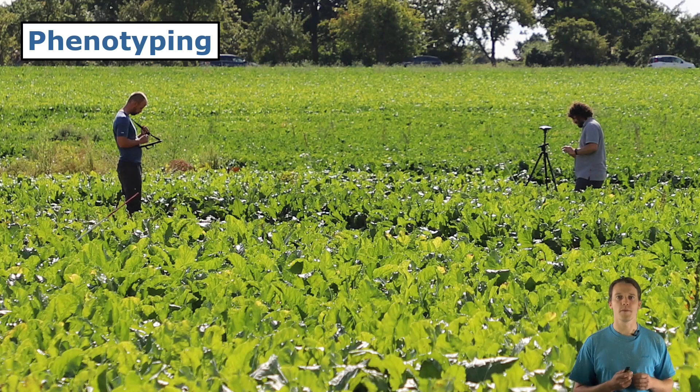One important step in the breeding process is the selection of the mother plants for the next breeding generation by evaluating specific traits, for example the leaf area. This process is called phenotyping. Today phenotyping is still mainly done by experts that walk through the field and measure and observe the plants, as you can see here in the image.